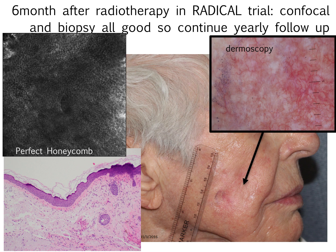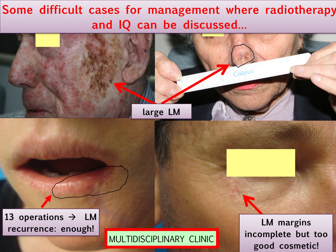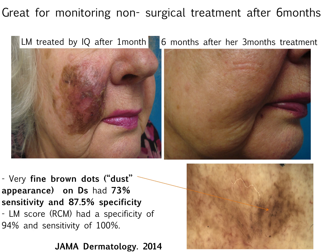Six months after radiotherapy for this very large area — in our randomized trial comparing radiotherapy and imiquimod for patients who don't want surgery or where surgery is not a good idea due to comorbidities — this patient had a perfect assessment and we continue to follow up. Some cases are difficult to manage and I do think there is a space for radiotherapy and imiquimod. We use a multidisciplinary clinic for very difficult or very large melanomas, where patients are not enthusiastic about surgery, have had surgery fail multiple times, or are very happy with results and don't want further surgery. Confocal is great for monitoring non-surgical treatment; we advise waiting six months before assessing, as it takes time for the skin to recover and the immune system to settle.